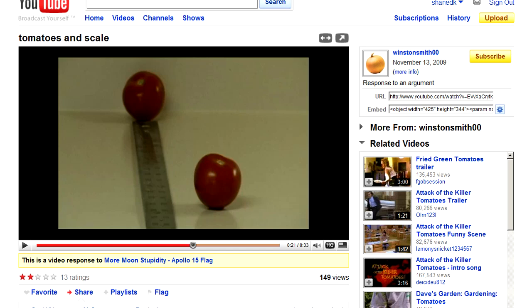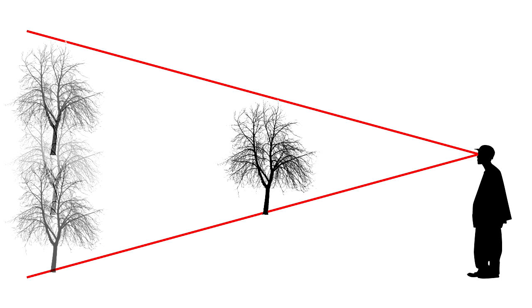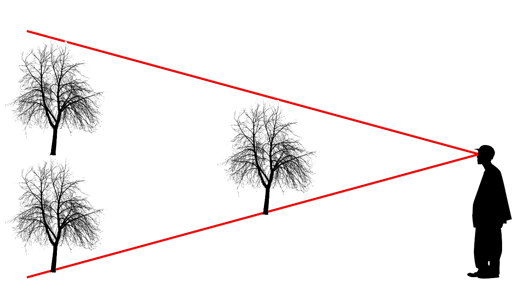First, some basic trigonometry. If you have two objects that are the same height, but one appears to be half the height of the other, then that object is twice as far away from you as the first one — all the time, every time. There really is no way around it. Only at that distance will the first object appear half the size.